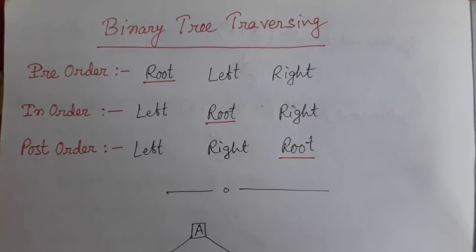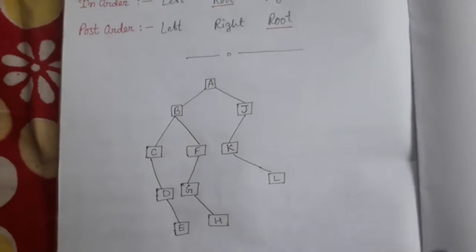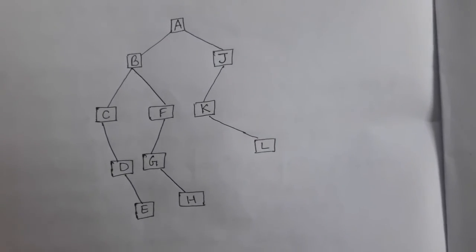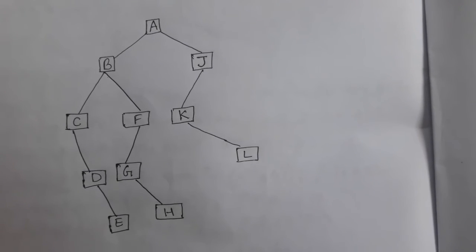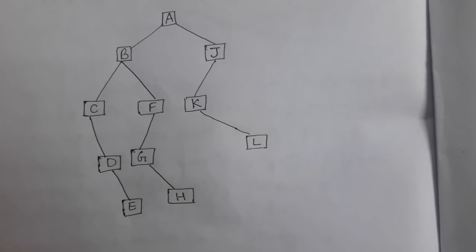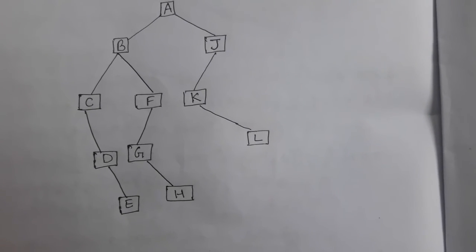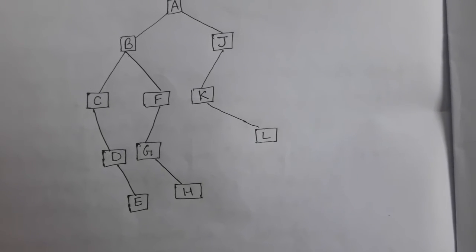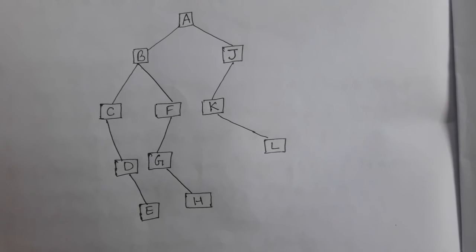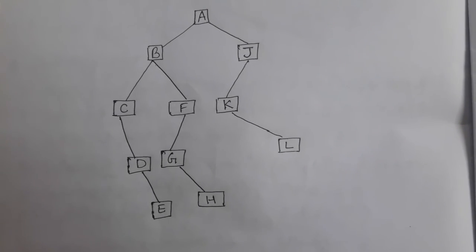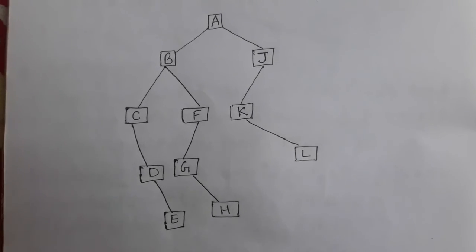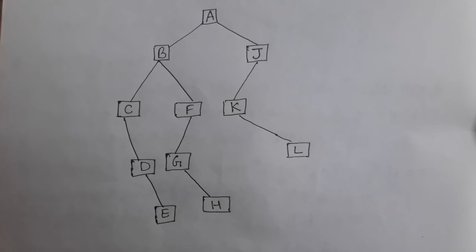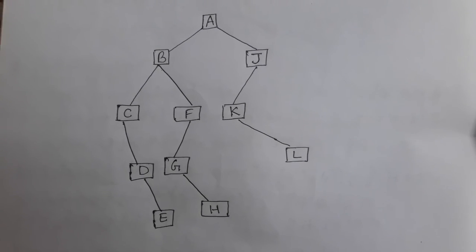Let us start. This is our tree. We can see nodes A, B, J, C, F, K, D, G, L, E, and H. These are the roots as well as our different nodes.